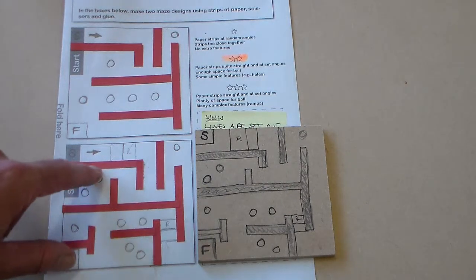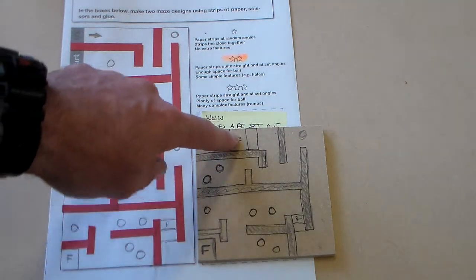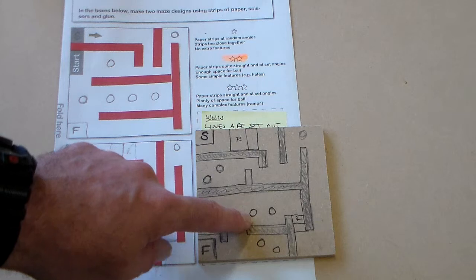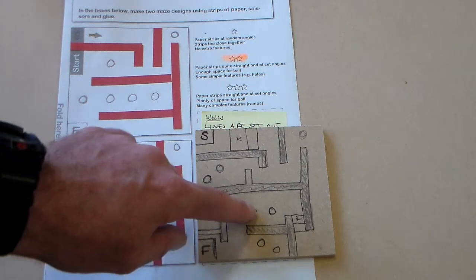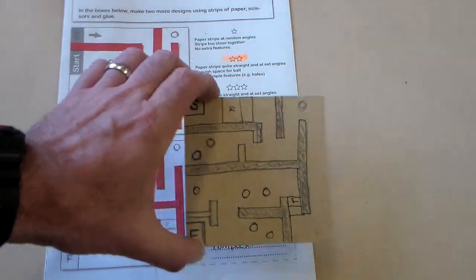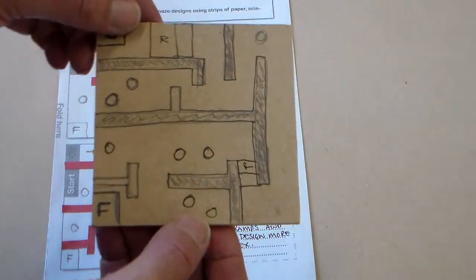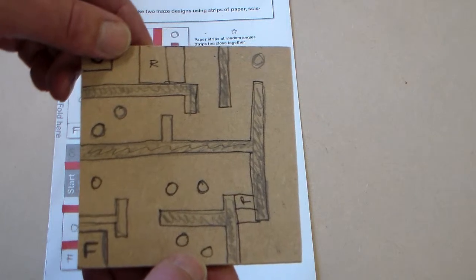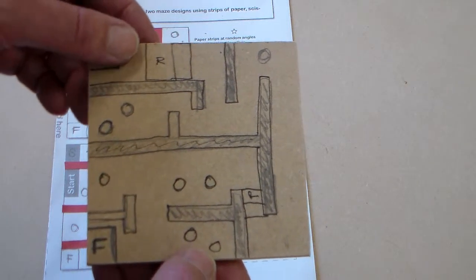So it's just careful following, drawing it rectangle by rectangle, adding the features, adding the balls where we think they might fall down and a start and finish. So we've added all these features onto our piece of MDF and now we're ready to start cutting.